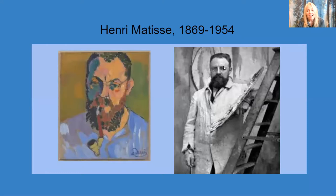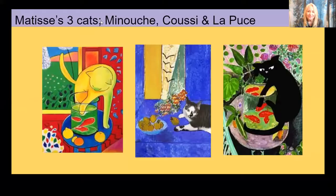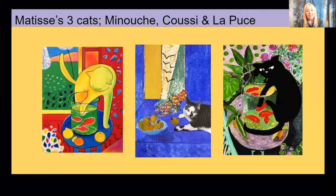So first we'll talk about Henri Matisse. He was from France — this is him, and this is a self-portrait. He was quite the pipe smoker. He is considered very influential in developing abstract art. One of the things I thought you would enjoy knowing is that he loved his cats. He had three cats, and he liked drawing and painting them. The first one is Minouche, the second is Cousy, and the third is La Puce. Minouche is just a French name, Cousy means cousin in French, and La Puce means the flea.